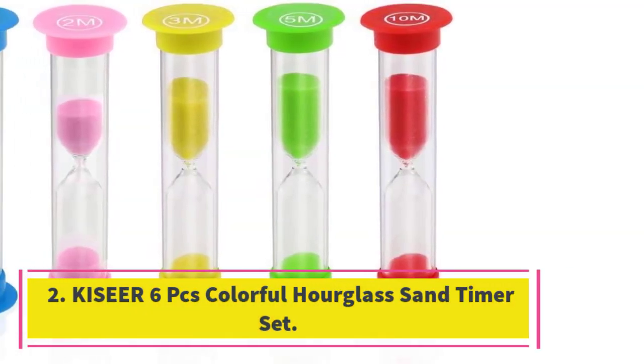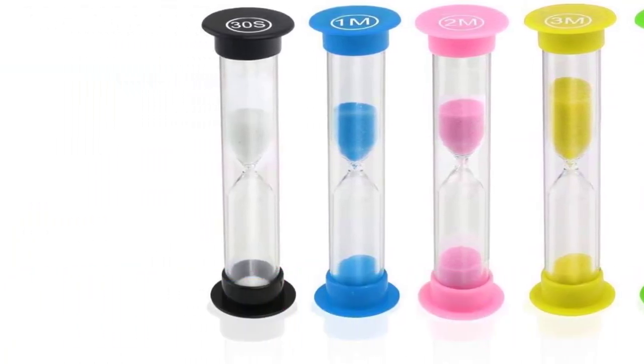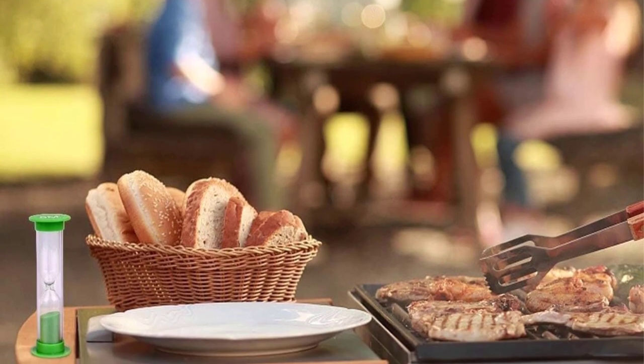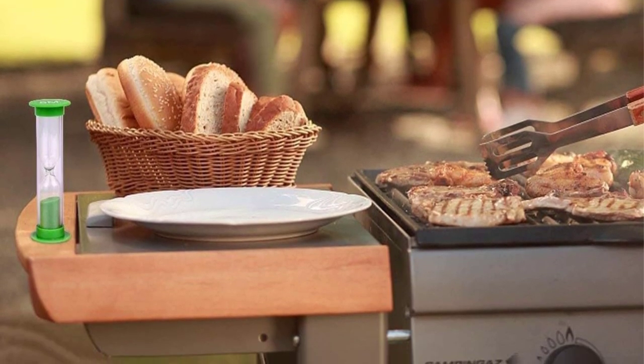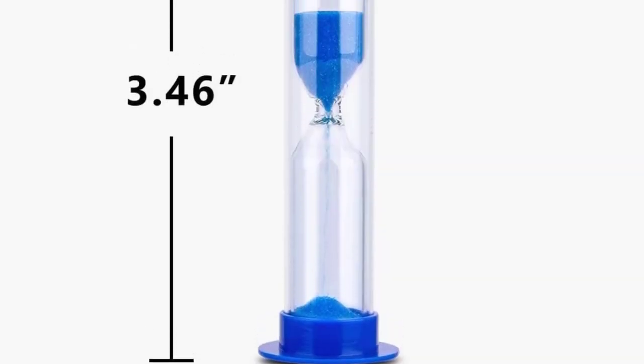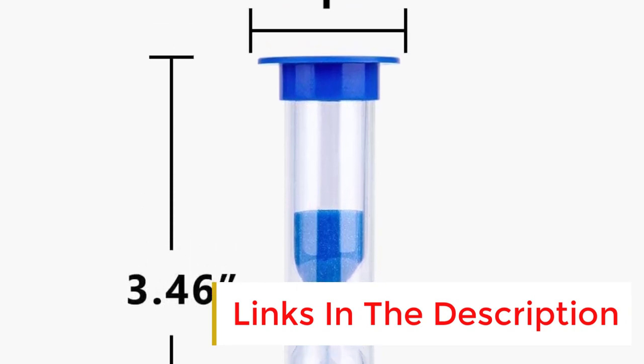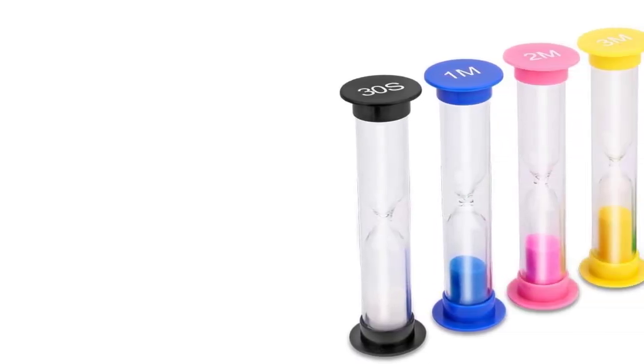Number two: Kyse ear six pieces colorful hourglass sand timer set. The Kyse ear six pieces colorful hourglass sand timer set is a fun and functional addition to your home or office. Made of durable PVC, ABS, glass tube and sand, these timers come in six different colors and time increments ranging from 30 seconds to 10 minutes. Use them for cooking, games, children's teeth brushing, sports, schools, and more. They can also be used as decorative pieces.